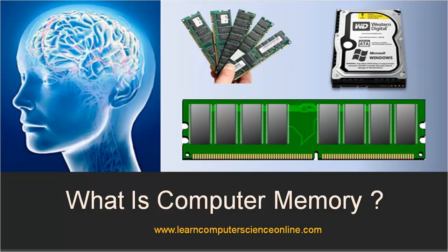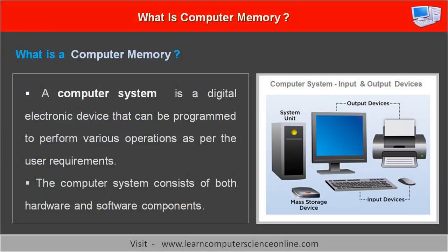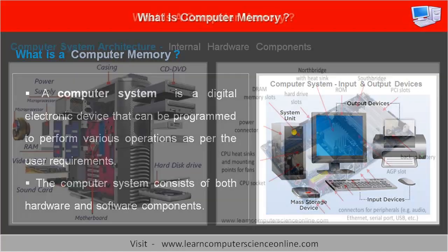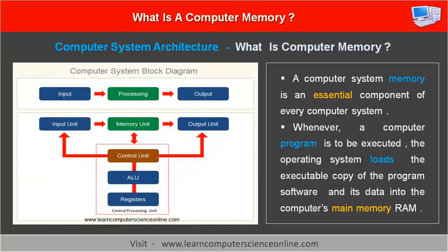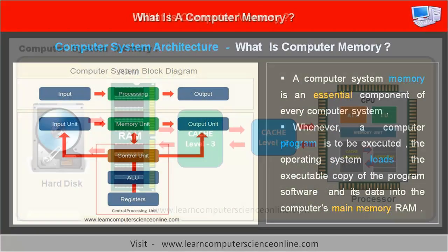Welcome to LearnComputerScienceOnline.com. In this video we are going to discuss what is a computer memory. A computer system is a digital electronic device that can be programmed to perform various operations as per the user requirements. The computer system consists of both hardware components and software components. A computer system memory is an essential component of every computer system.